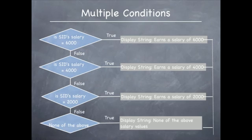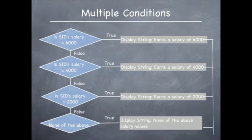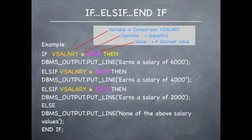If the answer is no, the salary is not 6000, the condition is false, we proceed to the next check which is to see if SID's salary is equal to 4000. For this condition also, the outcome can be true or false. If it is true, display 'earns a salary of 4000'. If it is false, proceed to check if SID's salary is 2000. If true, display 'earns a salary of 2000'. If false, display 'none of the above salary values'.